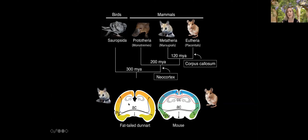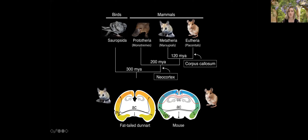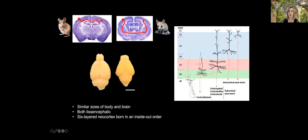The neocortex is at the top, the piriform cortex is on the side, the hippocampus is in the middle — but there's a massive structure clearly absent in marsupials: the corpus callosum. In eutherians, the corpus callosum connects the two neocortical hemispheres and allows them to communicate. This structure is simply not present in any marsupial or monotreme species — it has novelly emerged only in eutherian mammals.